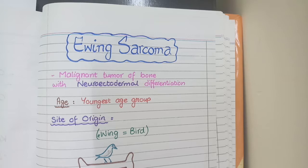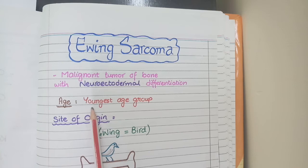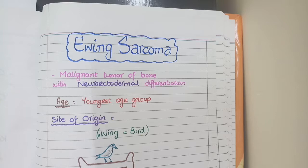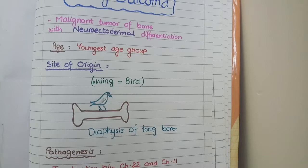As far as their age of occurrence is concerned, Ewing sarcomas occur in the youngest age group of less than 15 years of age. So out of all bone tumors, Ewing sarcomas occur in a young age of less than 15 years.